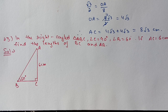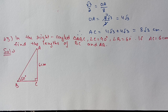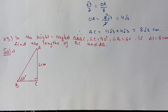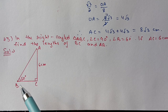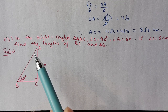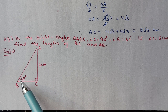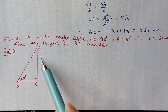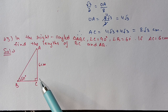Question 23: in the right-angle triangle ABC, angle C equals 90 degrees, angle B equals 60 degrees, and AC is given as 6 centimeters. Find the length of BC and AB. We will first draw the diagram — ABC is a right-angle triangle with C = 90°, B = 60°, and AC = 6 cm.